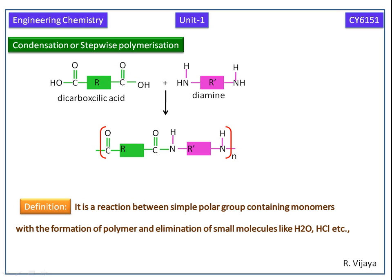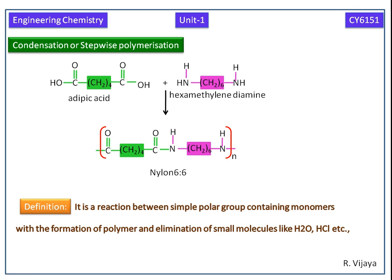If R is a tetramethylene group, we get adipic acid. If R' is a hexamethylene group, we get hexamethylene diamine. So this polymeric product will be nylon 6-6.